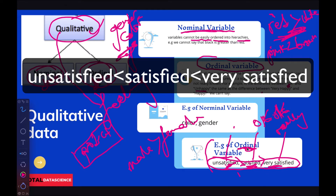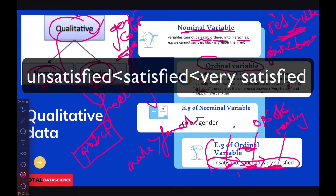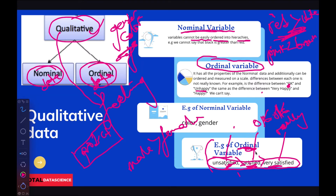That becomes ordinal — it has an order in it. If you see the name 'ordinal,' it has 'order' in it. Nominal, on the other hand, does not have order — you cannot order gender or colors. So that's the difference between nominal and ordinal data.